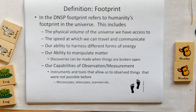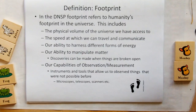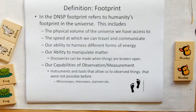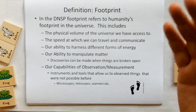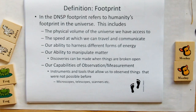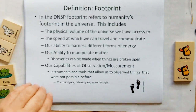Let me give you the definition of footprint — the same definition from the previous video. In the Distinti New Science paradigm, footprint refers to humanity's footprint in the universe. This includes our physical volume of the universe we have access to, the speed at which we can travel and communicate, our ability to harness different forms of energy, our ability to manipulate matter — for example, smashing two atoms together to see what parts fly out — and our capabilities of observation, including our ability to measure and how precisely, such as telescopes, microscopes, scanners, etc.